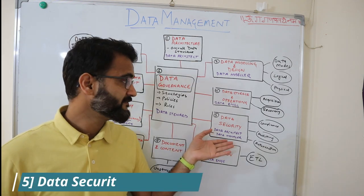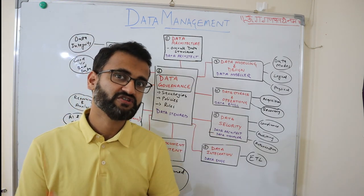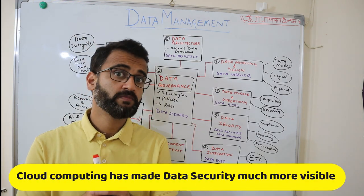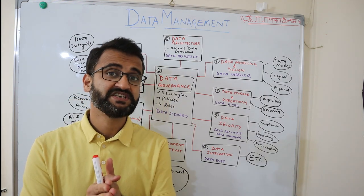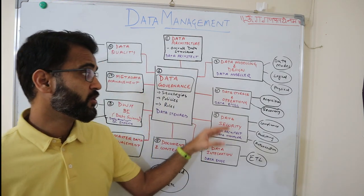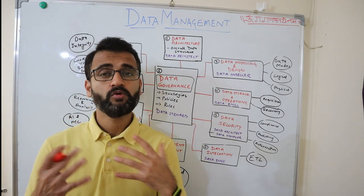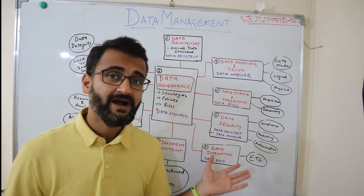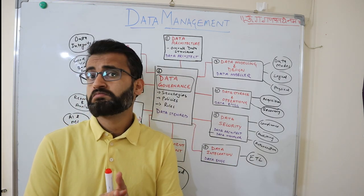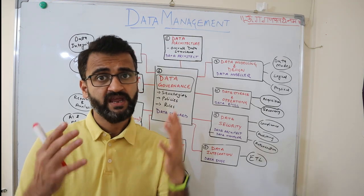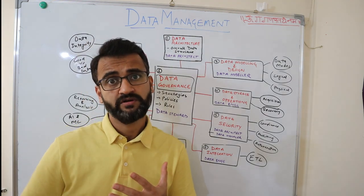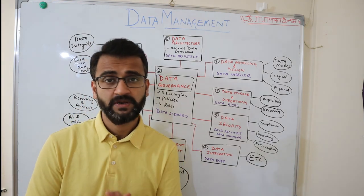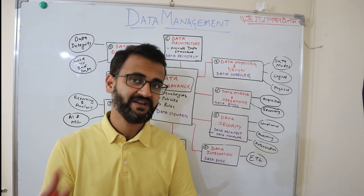The fifth area is data security — the name is self-explanatory. It covers all the compliances, audits, and security mechanisms that need to be in place, as well as data authorizations. There is no single dedicated role I have seen that is entirely specific to data security; generally, your data architects, data managers, or data engineers work alongside the security team to define a data security framework for the overall company. This can vary from case to case.